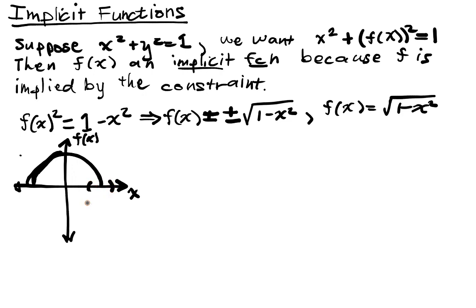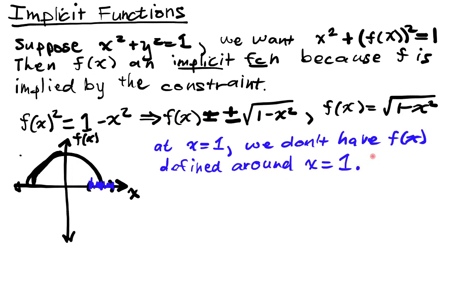But notice that over here, in this region, past x is equal to 1, I don't have a well-defined function. So at x is equal to 1, we don't have f of x defined around x is equal to 1. And that means there is no implicit function around x is equal to 1.